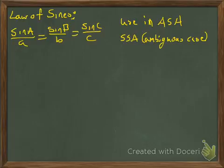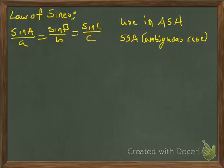For the law of sines, if I know an angle, a side, and an angle — or I know a side, a side, and an angle — then I will use the law of sines. If I know a side, an angle, and a side, I'd use the law of cosines, or if I know all three sides, I'd use the law of cosines. The side-side-angle is what we call the ambiguous case, and that's what we're going to look at.